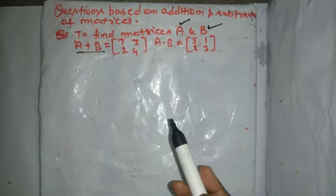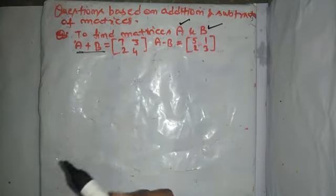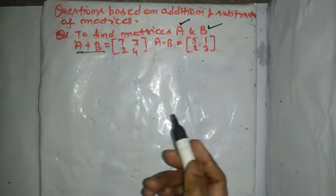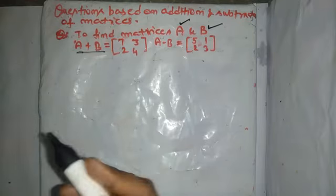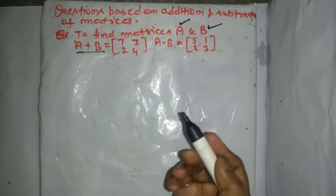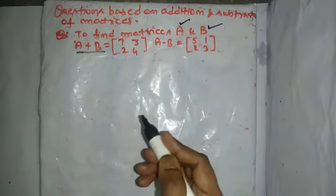You have to find matrix A and B. Now, you say matrices naam sajhkar agar hum algebra ki equations samjhiye, jahan x or y ki do equations diya hai, unki value find karni hai.